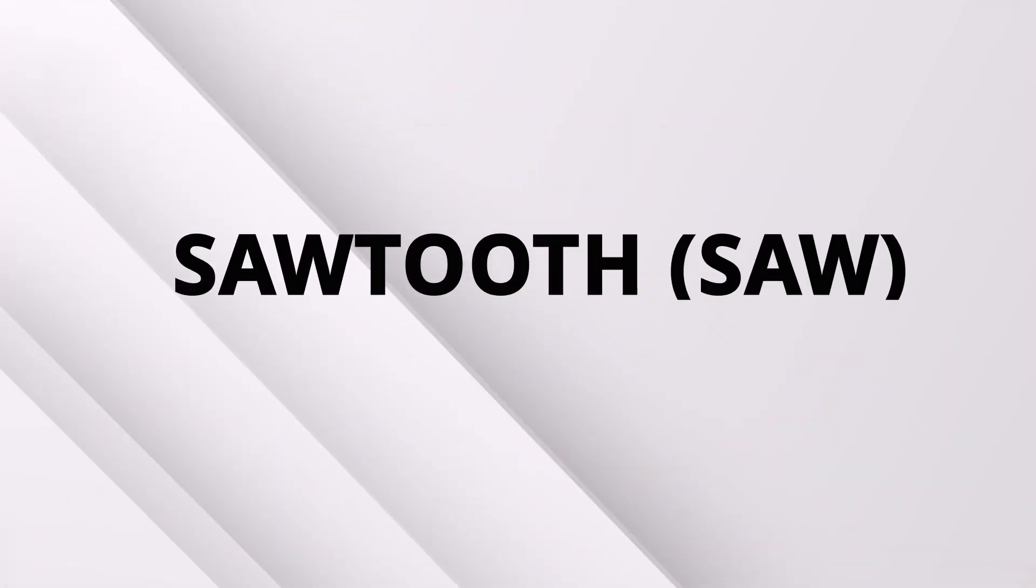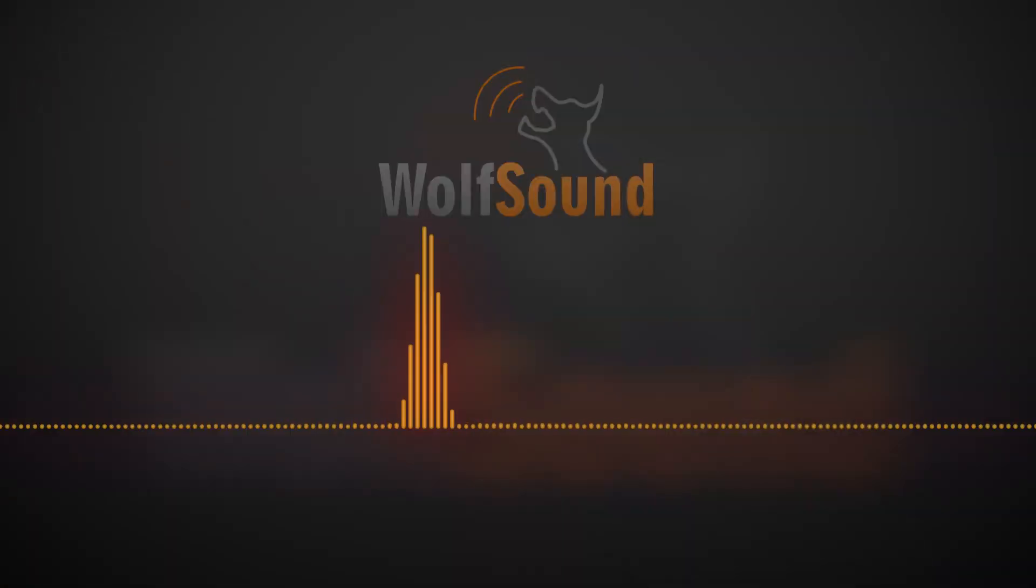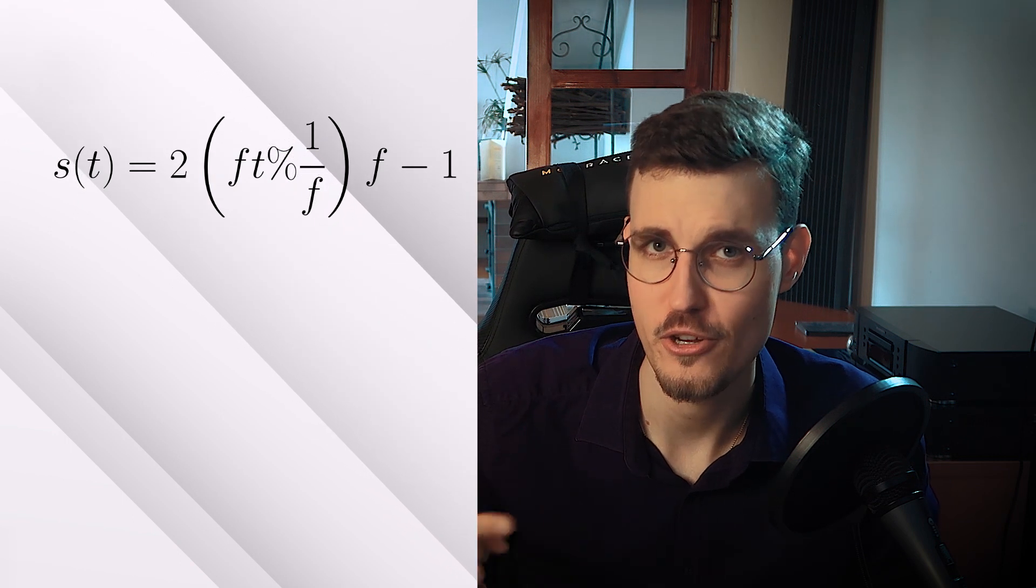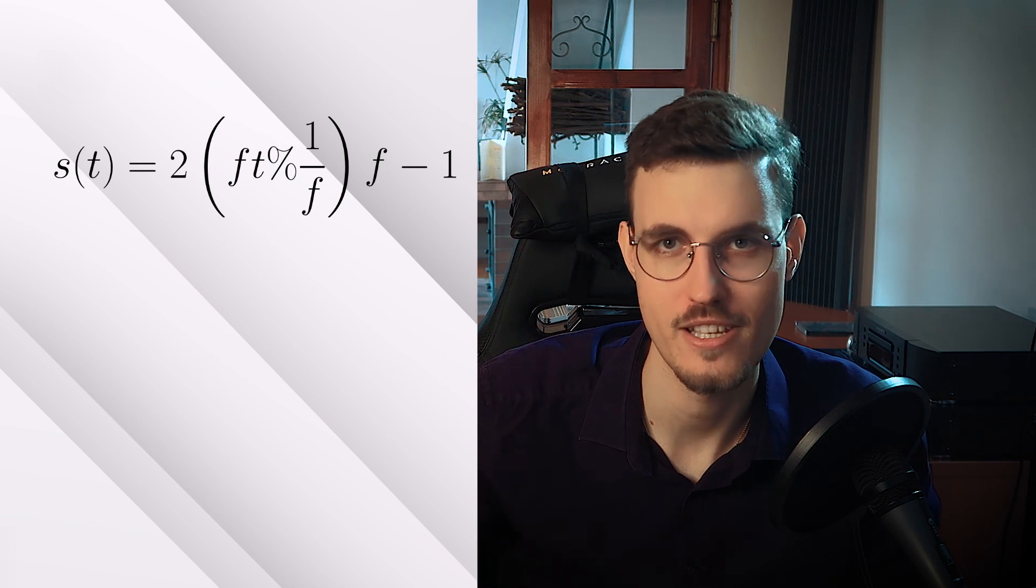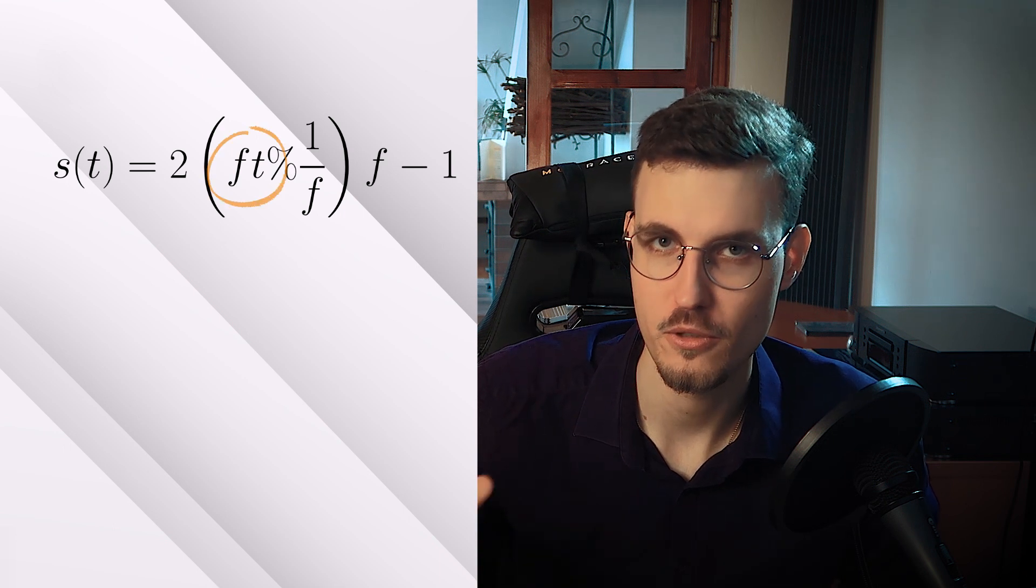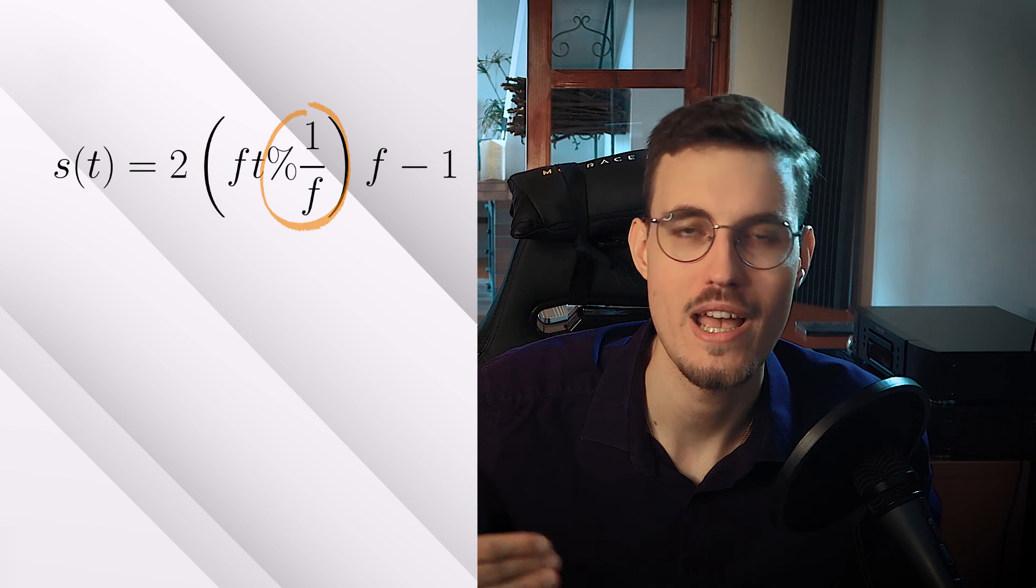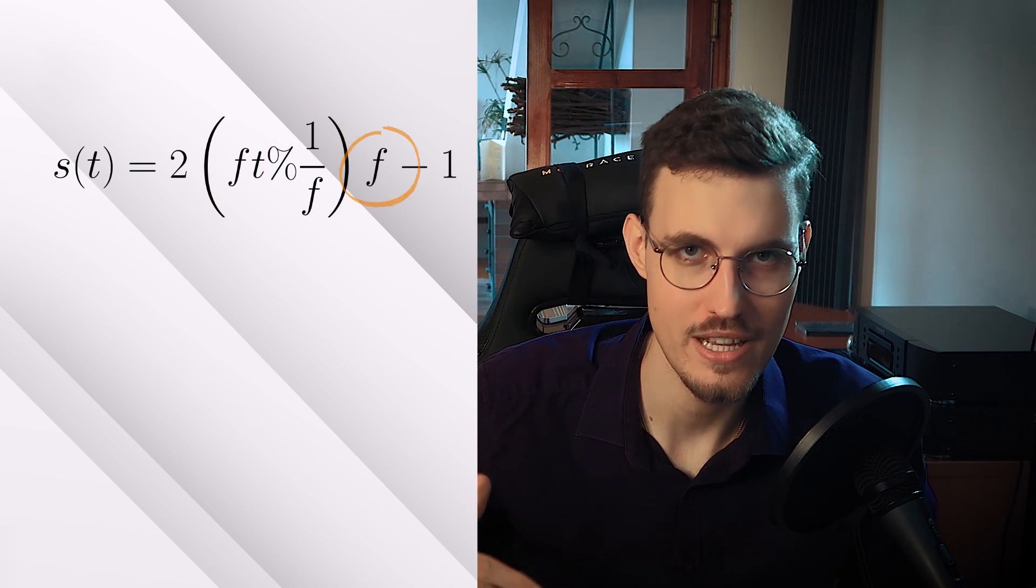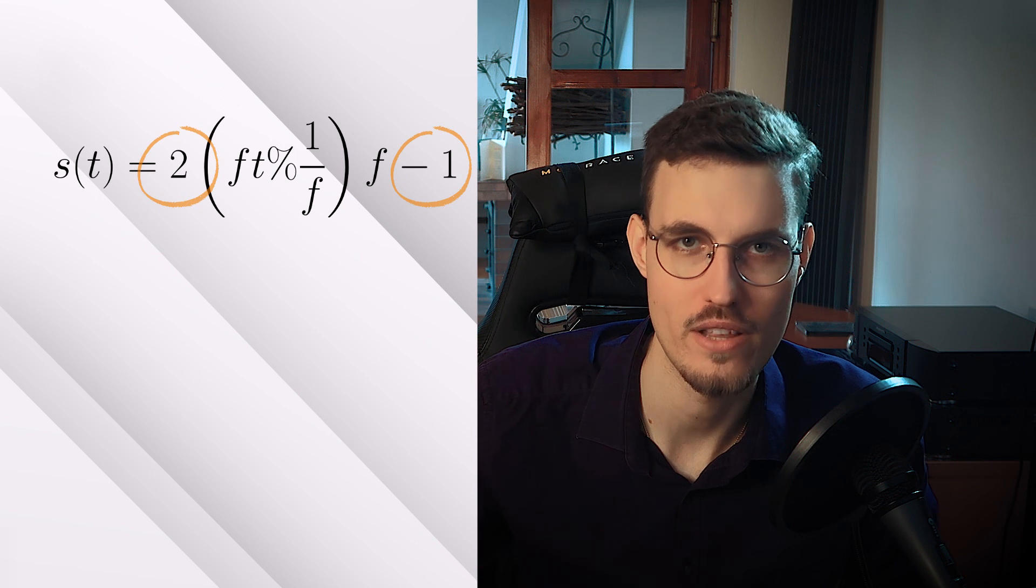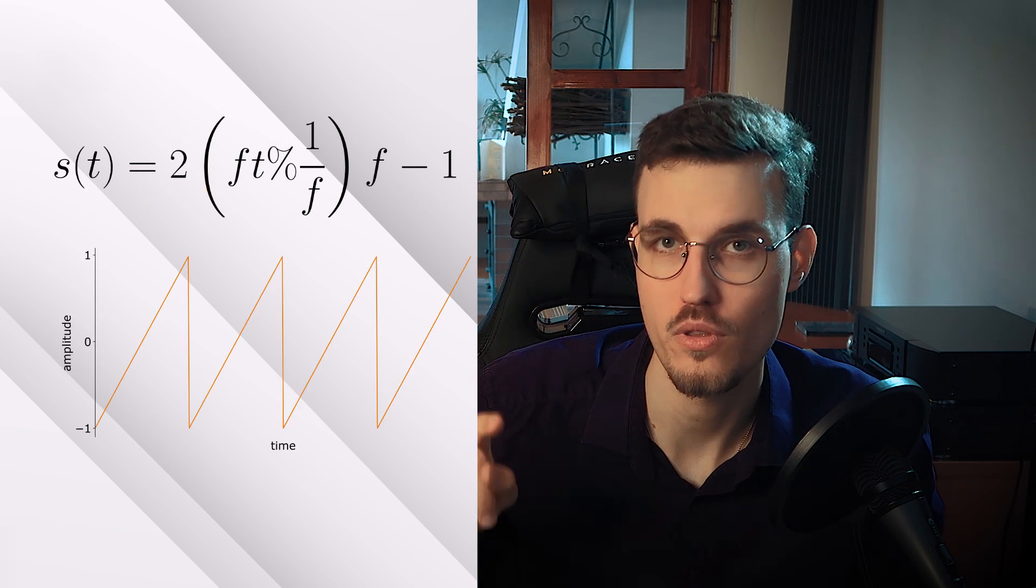The next wave, and my personal favorite, is the sawtooth waveform, also known as the saw. At 220 Hz, it sounds like this. Nice. The simplest formula for the sawtooth wave is a modular approach, where f is the sawtooth's frequency in hertz, t is time in seconds, and percent is the modular operator applied to real values. The formula reads: increase the value linearly, jump back to 0 every period, scale to the 0-1 range, and then expand the range from 0-1 to minus 1-1. Here you can see the sawtooth in the time domain.